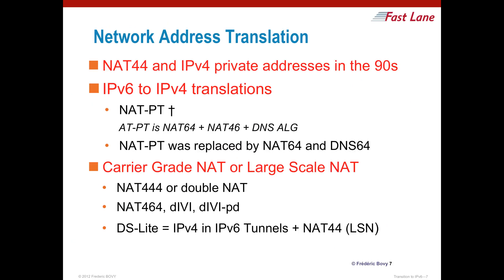The first tools used to help the transition were network address translation protocols. NAT44 and IPv4 private addresses in the 90s were the very first example. Some people think NAT is an IP feature that was there since day one for IPv4, but NAT was only a workaround to deal with address depletion. NAT44 extended the life of IPv4 for 20 more years, but it also broke many features of the internet. One goal of IPv6 is to get rid of NAT to restore those features.